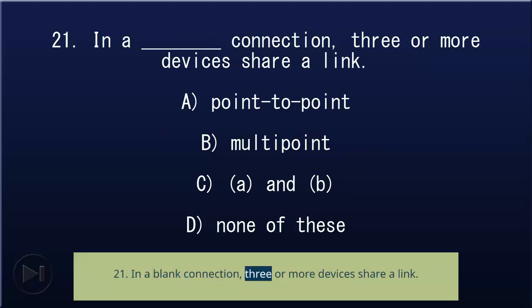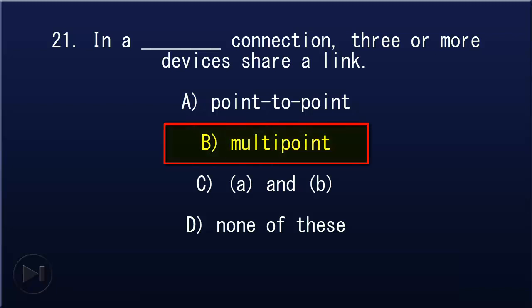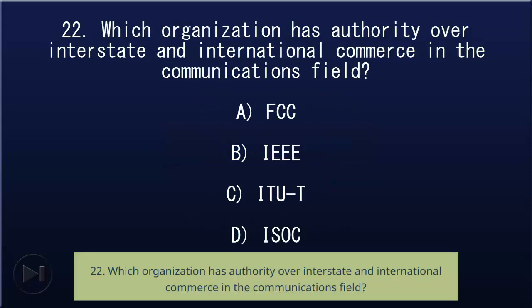21. In a blank connection, three or more devices share a link: A) point-to-point, B) multipoint, C) A and B, D) none of these. Answer: B, multipoint.